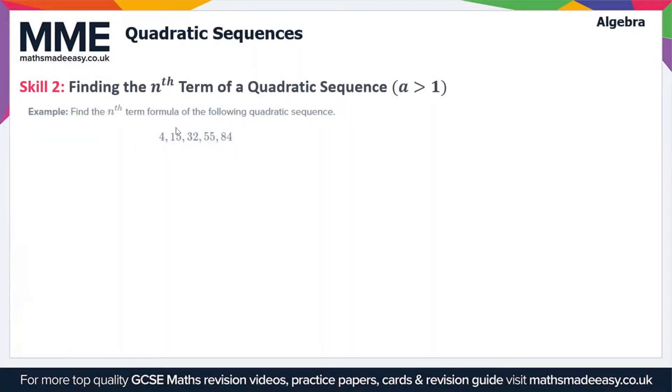Welcome to the Maths Made Easy tutorial on quadratic sequences. This is the second video on the topic. If you've not watched the first one yet, we go through a much more straightforward example in that video. Here we're going to look at finding the nth term of a quadratic sequence when a is greater than 1. So a is the coefficient of n squared in the nth term formula: a n squared plus bn plus c. This is the generic nth term formula for a quadratic sequence.